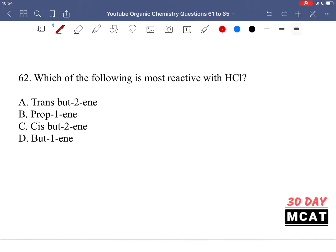In question 62 we're asked which of the following is most reactive with HCl. For this we're going to draw out the compounds. Trans-but-2-ene would be one, two, three, four. It would look like that. Option B looks like this. Option C looks like this. And option D looks like this.